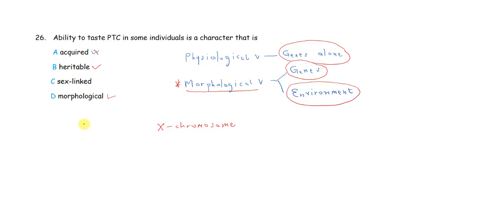Then D, morphological. Can we see it? The answer is no. So, the best answer for this particular question is heritable, in the sense that the ability to taste PTC is not something you can see, but it is a function of how your body works. And then secondly, because physiological variation is based on genetics, this makes option B our most likely answer.